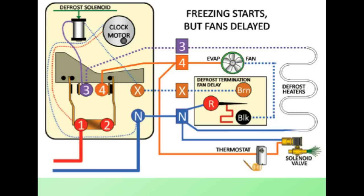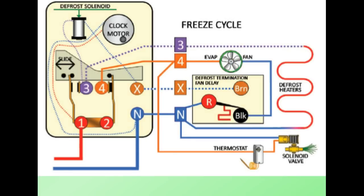We're back to the freeze cycle now. After the coil has cooled down to 25 degrees Fahrenheit, the fan delay part of the defrost termination and fan delay has now made contact to allow the neutral to flow through to turn on the fans. So we're back to where we originally started.